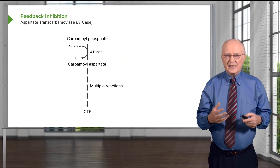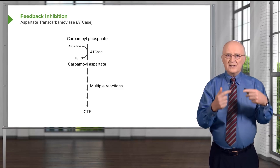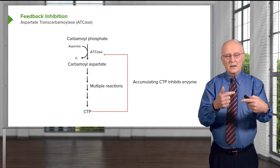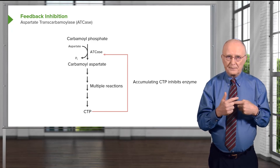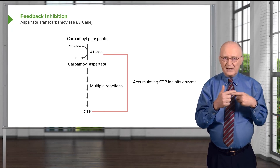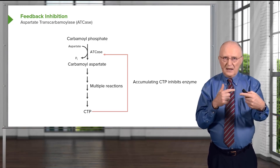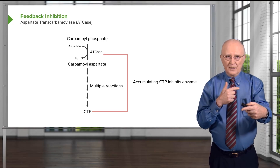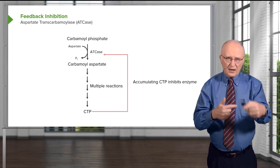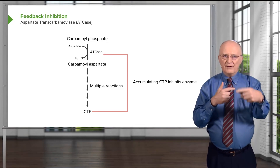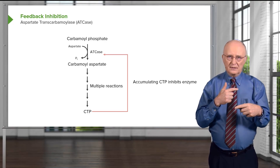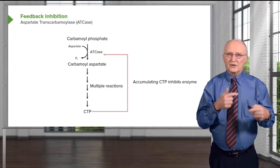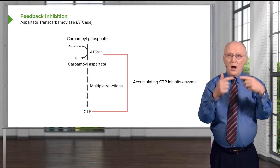Another important feature of the ATCase system is that it's a prime example of feedback inhibition. Feedback inhibition occurs when the last molecule in a metabolic pathway comes back and inhibits the first enzyme in the pathway. ATCase does not directly catalyze the formation of CTP — it catalyzes the formation of things that ultimately become CTP. So CTP, the end product, inhibits the enzyme. This is a very efficient way of controlling an entire metabolic pathway: by controlling the very first reaction, one controls the entire pathway, because if the first product isn't available, then subsequent products won't be available, all the way down to CTP.